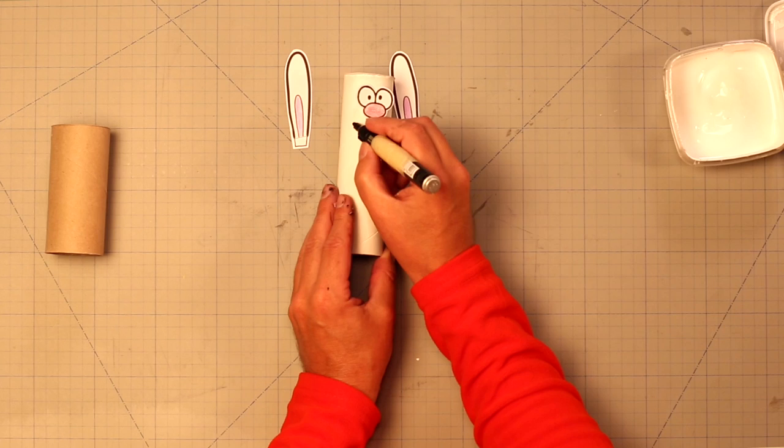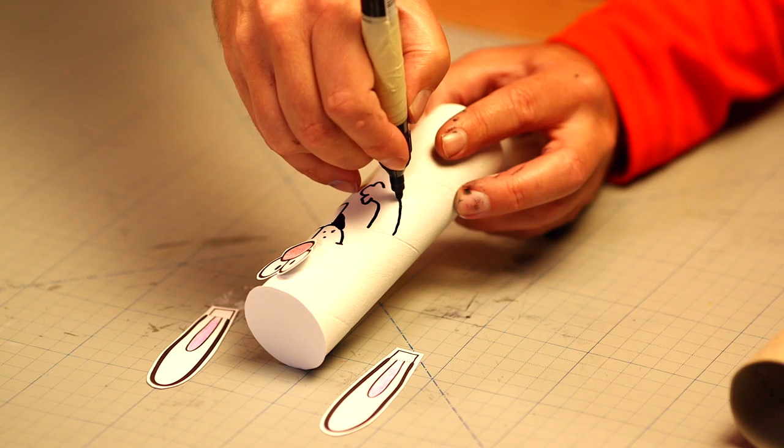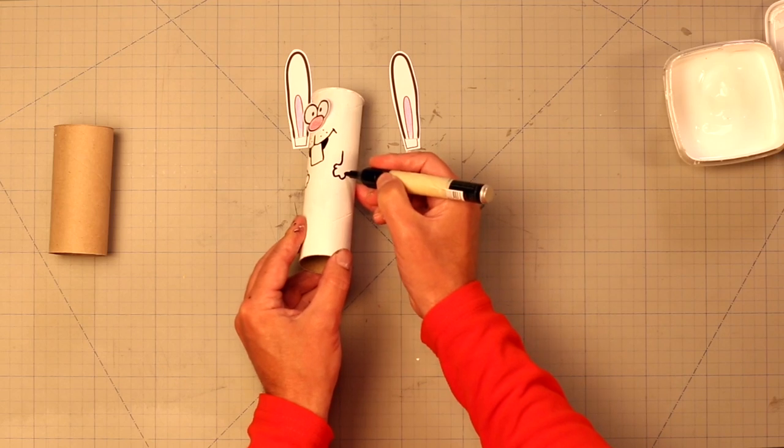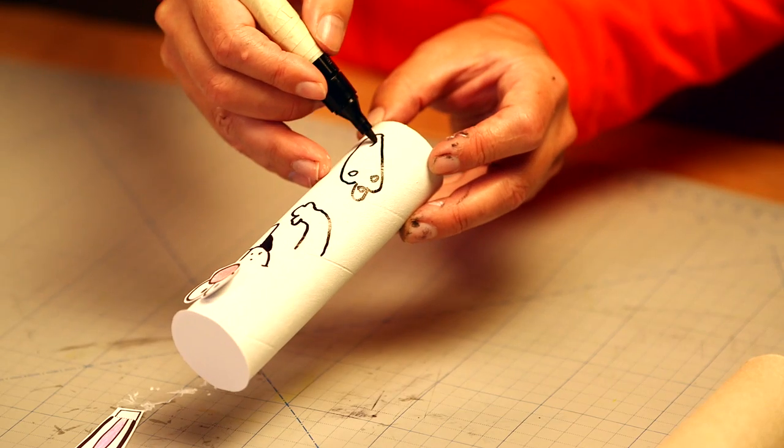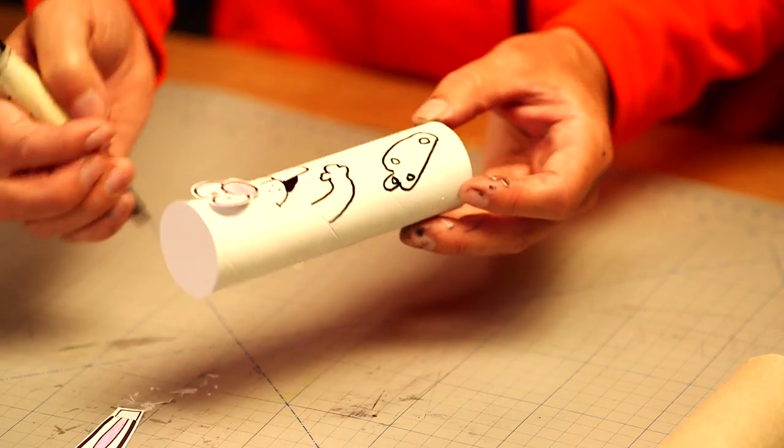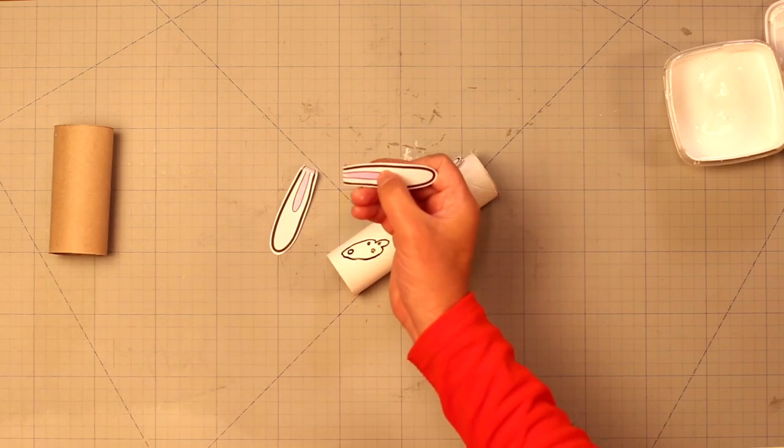Then we draw the rest of the face, and the arms and feet with a black marker. Not to forget the long ears.